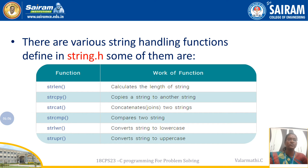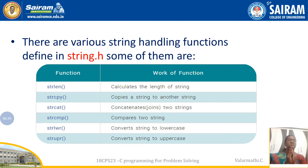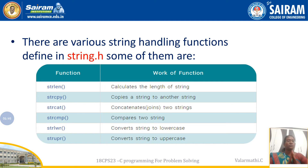If all characters in both strings match, `strcmp` returns zero. If they do not match, it returns an integer representing the difference between the ASCII values of the differing characters — the first string's character versus the second string's character.